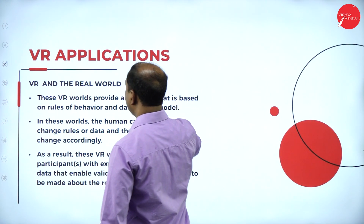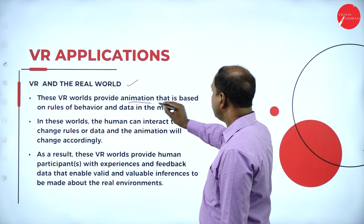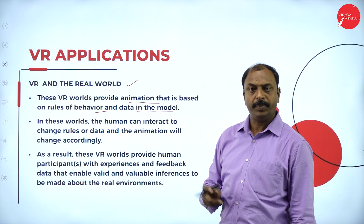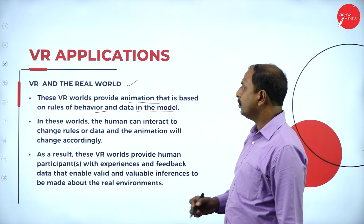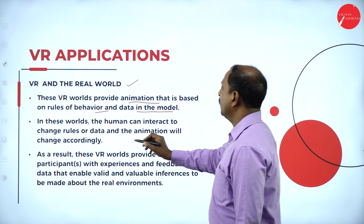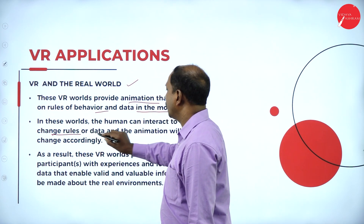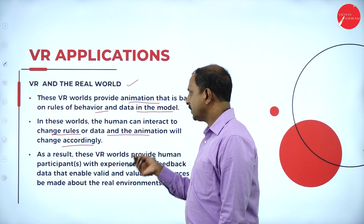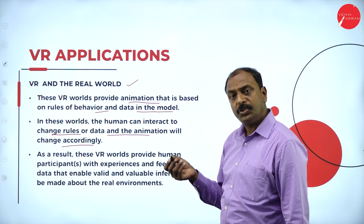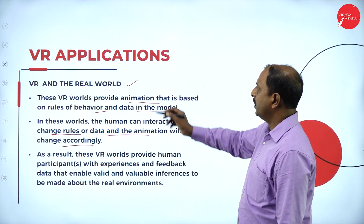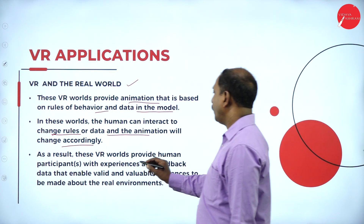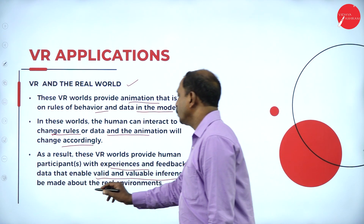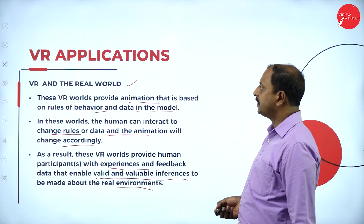The next application is VR and the real world. Here the VR world provides animation based on rules of behavior and data in the model. Each model has its own behavior, rules, and regulations. A human can interact to change the rules or data, and the animated model will change accordingly. This provides human participants with experience and feedback data to make valid inferences about the real world environment.